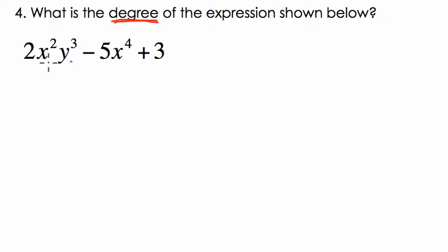Well, look at this term right here. Notice there's more than one variable, x and y, and there are different powers 2 and 3. When that happens, we add the exponents of these two variables. 2 plus 3 is 5, therefore, this is a 5th degree polynomial.